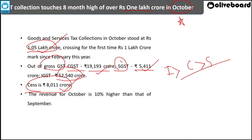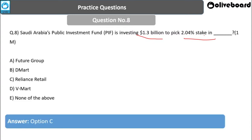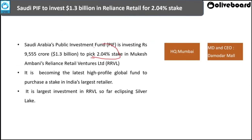Next question: Saudi Arabia's Public Investment Fund is investing $1.3 billion to pick up a 2.04% stake in which organization? Options: Future Group, D-Mart, Reliance Retail, V-Mart, or None of the above. The answer is Reliance Retail. Saudi Arabia's Public Investment Fund is planning to invest in Mukesh Ambani's Reliance Retail Ventures, becoming the latest high-profile global fund to purchase a stake in India's largest retailer.